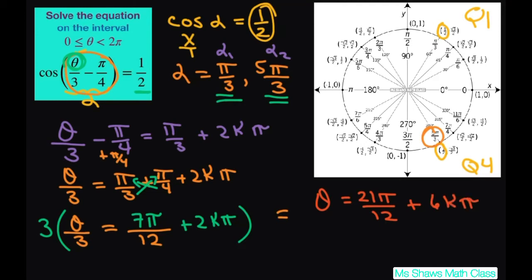Now we have to also do our other one. So we can reduce this by 3, so this is going to be 7π divided by 4 plus 6kπ. Now let's do the other one.